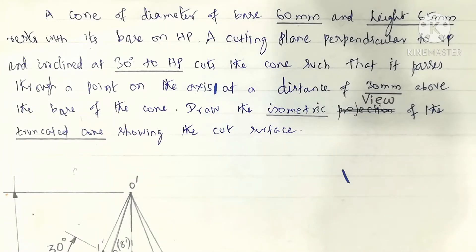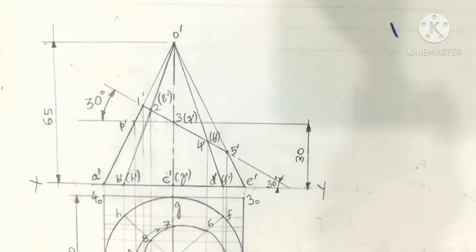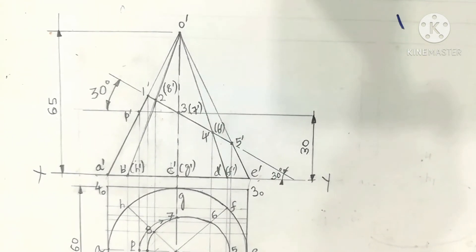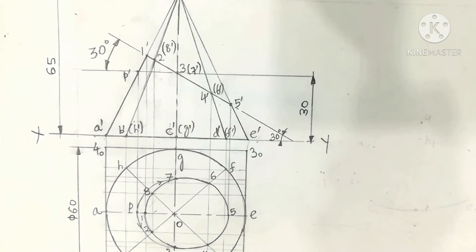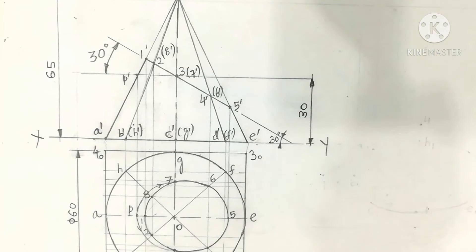This is about the isometric view and the object is a cone. When a cone is cut inclined to the base, the retained portion of the solid is called a truncated cone. The truncated cone is shown in this diagram.